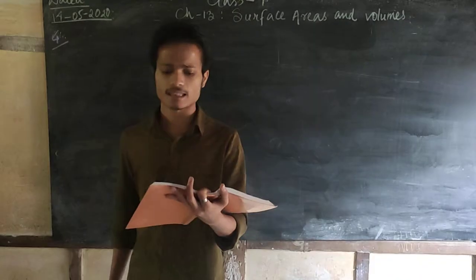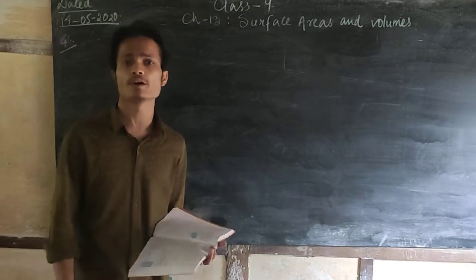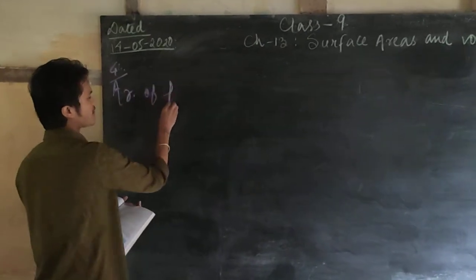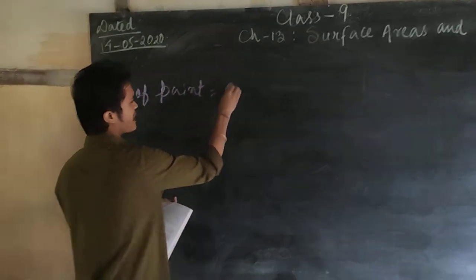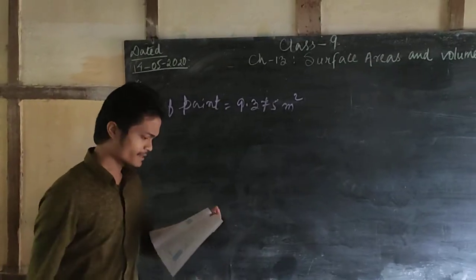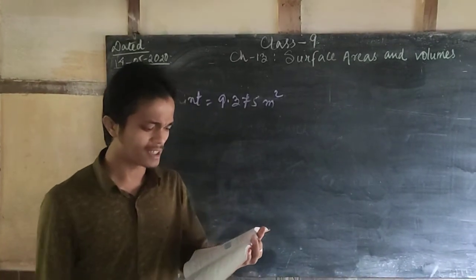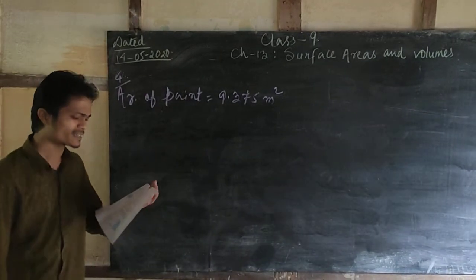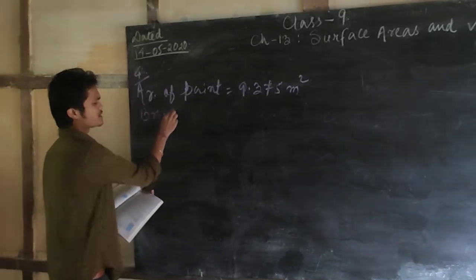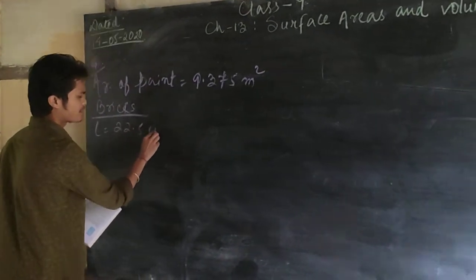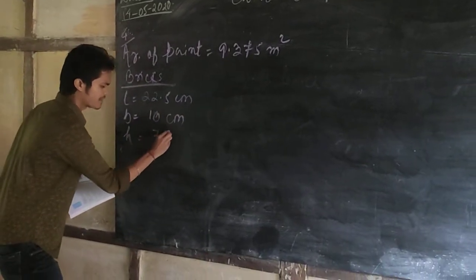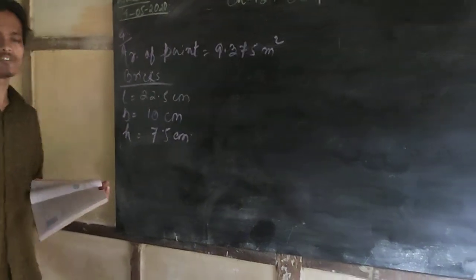Paint in a certain container is sufficient to paint an area equal to 9.375 meters squared — that is the area of the paint given. Now, how many bricks of dimension 22.5 centimeters by 10 centimeters by 7.5 centimeters can be painted out of this container? The dimensions of the bricks are: length is 22.5 centimeters, breadth is 10 centimeters, and height is 7.5 centimeters.